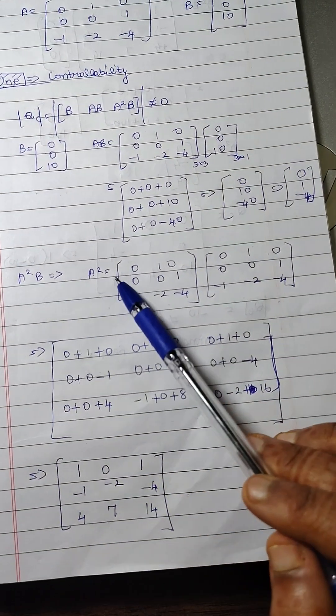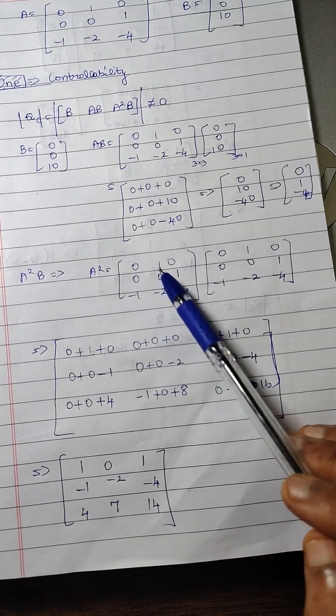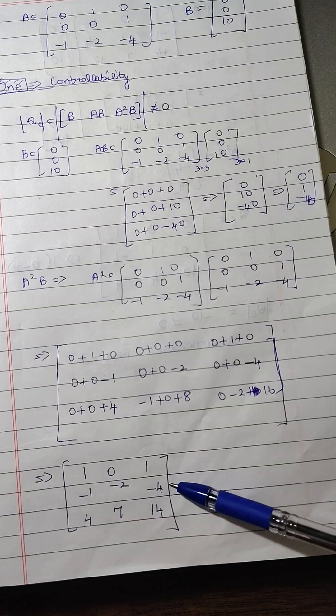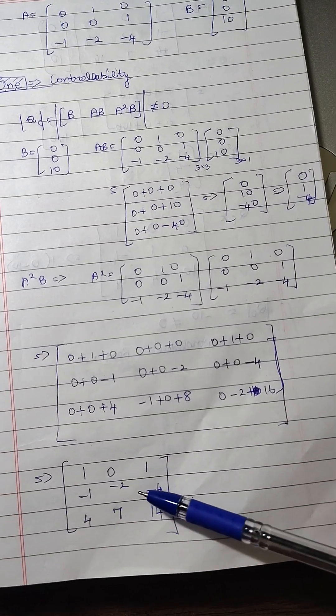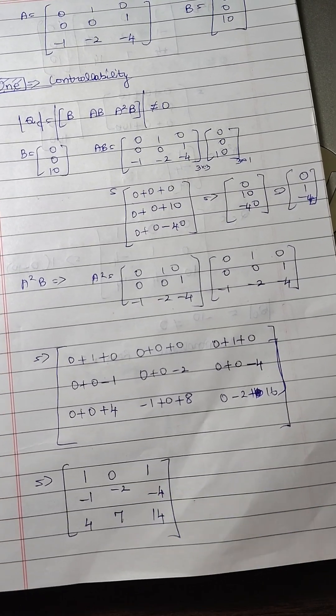Now, we have to find the A square B. First we need to find the A square A into A and we are getting the output as 1, 0, 1, minus 1, minus 2, minus 4, 4, 7 and 14.